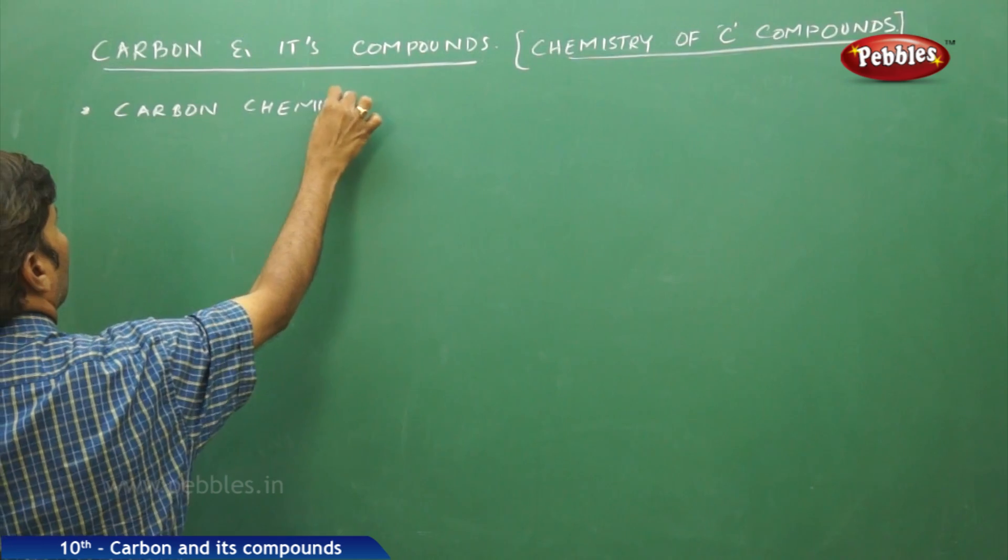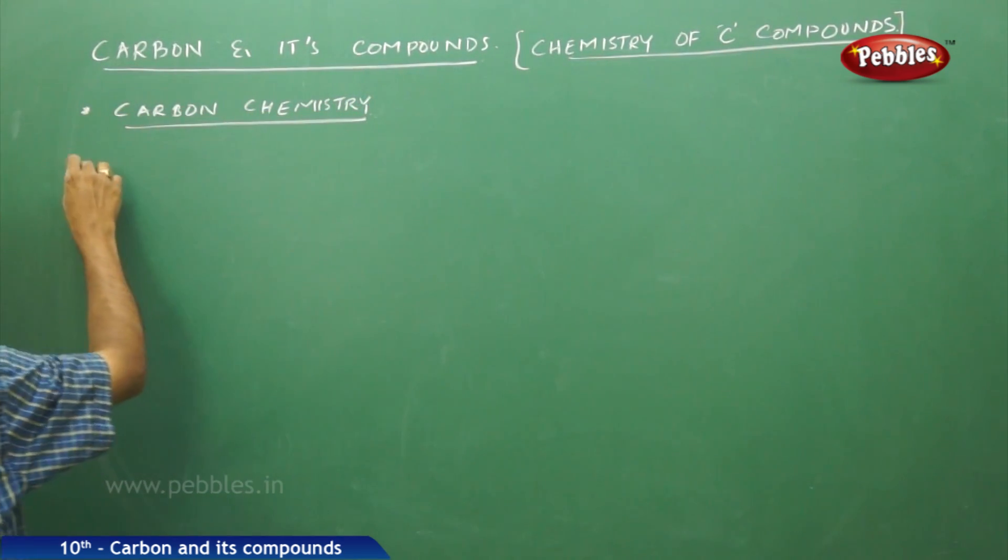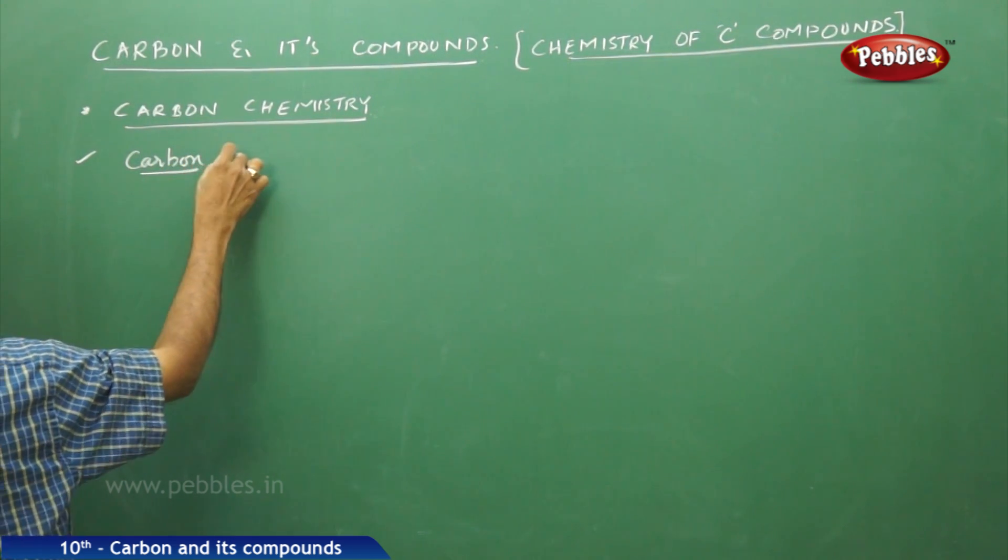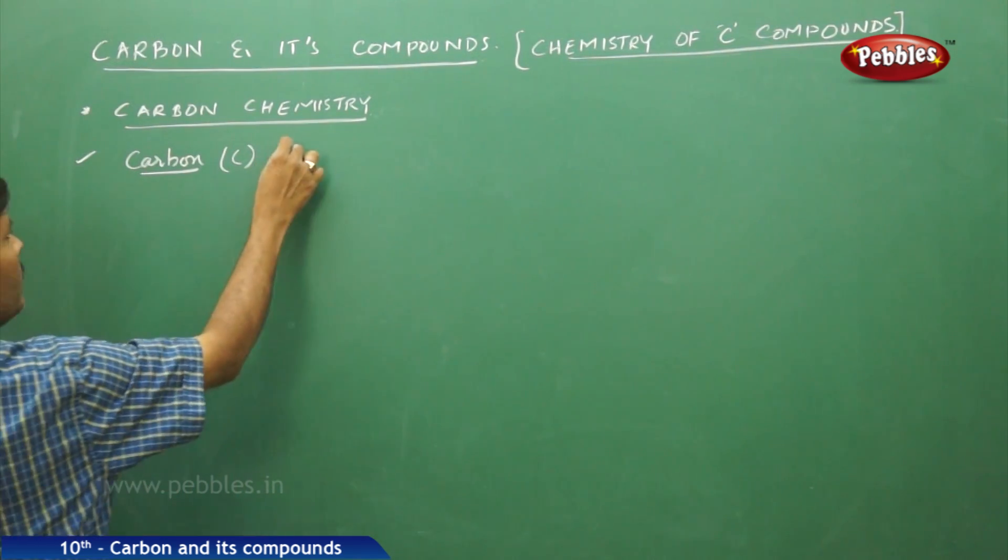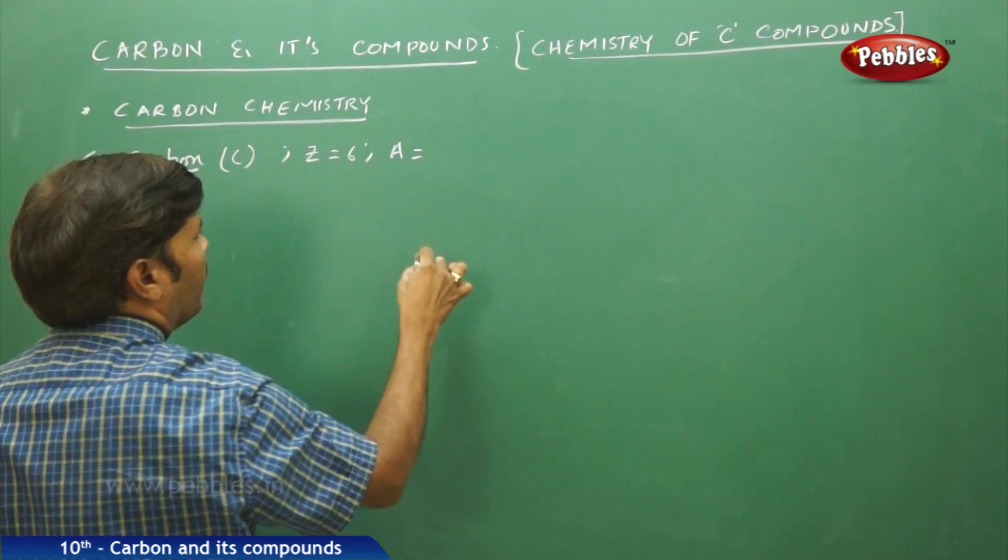If you take carbon, carbon symbol is C, its atomic number is 6, atomic mass represented by A = 12.